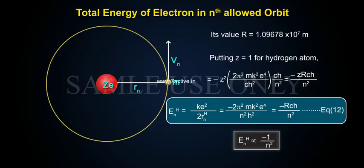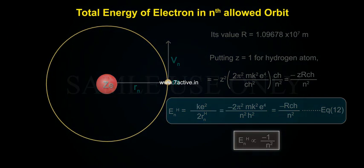Therefore, En is directly proportional to minus 1/n² — Equation 12.